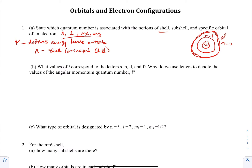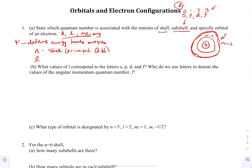For subshell, remember that subshell comes from the blocks on the periodic table — the S block, P block, D block, and F block. These come from L. So L=0 is S, L=1 is P, L=2 is D, and L=3 is F. That makes L our subshell designation.